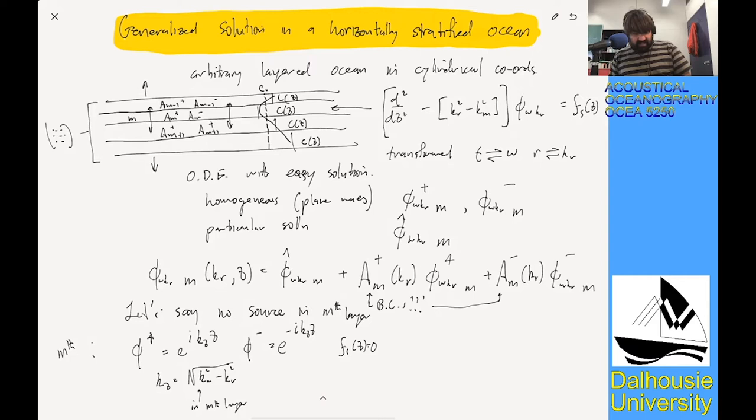And then we can simply say, well, phi omega, so transformed into the solution to the Helmholtz equation, then it's just going to be integral from zero to infinity of A minus E to the minus I K Z Z plus A plus E to the I K Z Z and then we have our J-naught K R R K R D K R. This is just inverse Hankel.